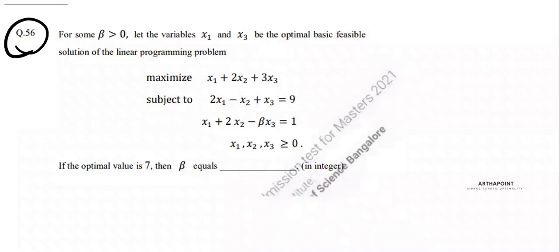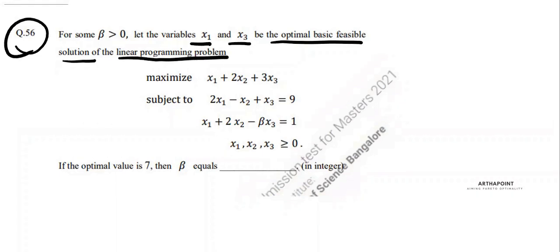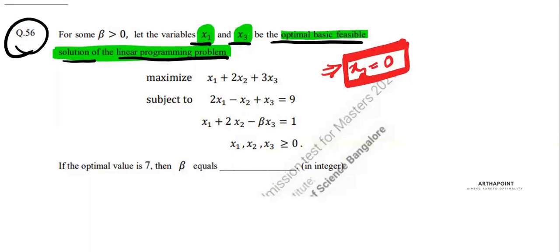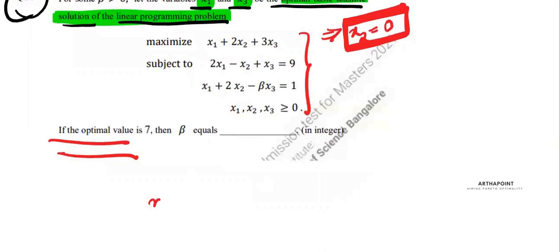This is question number 56 of IIT JAM 2021 paper. Let x1 and x3 be the optimal basic feasible solution of the linear programming problem. Now this is a little tricky — x1 and x3 are the optimal basic feasible solution, which means x2 is 0 because there is no value of x2 given. So I'll take x2 as 0. The optimal value is 7.